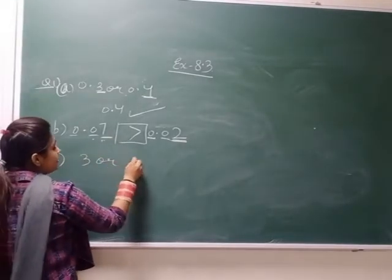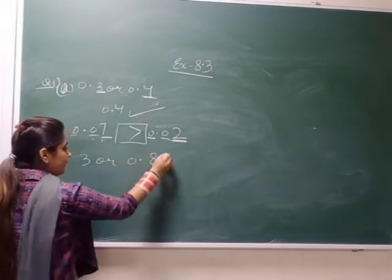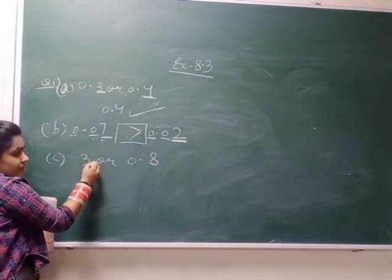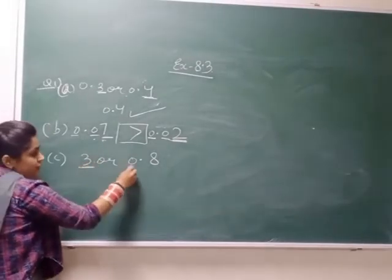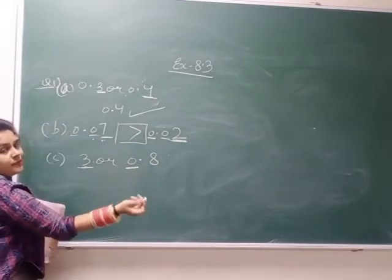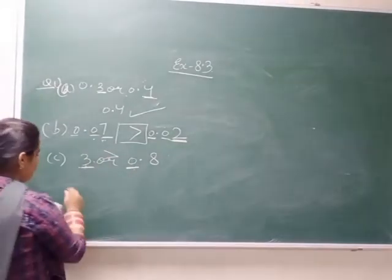3 or 0.8. Now 3. This number has no decimal. So compare the first digit. Here it is 3 and here it is 0 point something, so obviously 3 is greater. Fine.